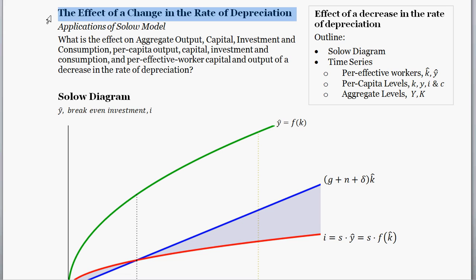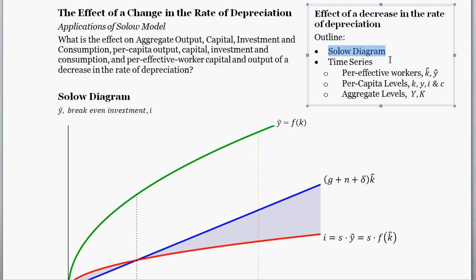We're going to look at the effect of a change in the rate of depreciation. My plan of attack is to analyze things through the SOLO diagram. I'll also pull out some of the equations we've worked through, but the focus will be on the SOLO diagram and how a change in depreciation affects it. Then we'll go to the time series graphs for per effective worker levels — k hat, y hat — per capita levels of capital, output, investment and consumption, and then aggregate levels of output and capital.